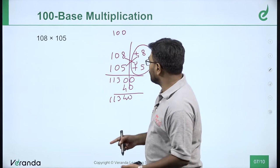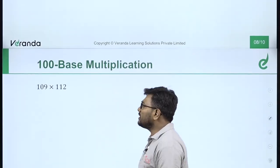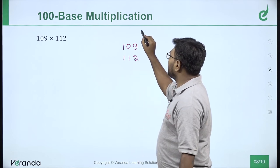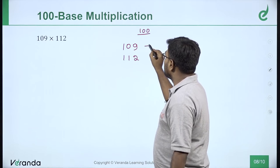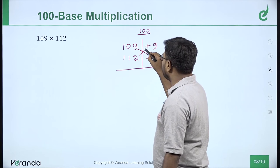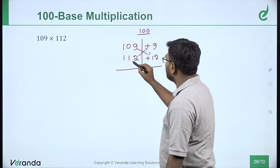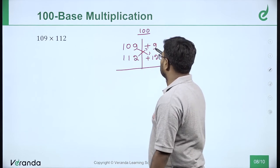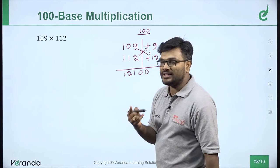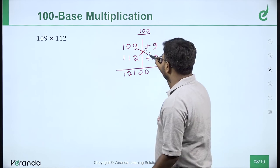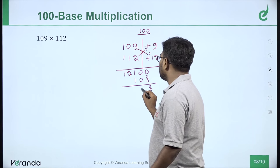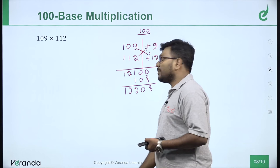Question: 109 into 112. Both numbers are nearest to 100. 109 is plus 9 extra, 112 is plus 12 extra. Same method: cross add, either 109 plus 12 or 112 plus 9, both give 121. 121 into base, 121 into 100 equals 12100. Next step: multiply differences, plus 9 times 12 equals 108. Add to get final answer: 12208.